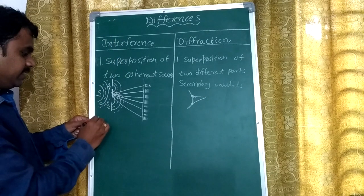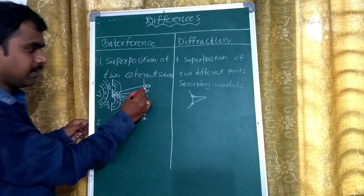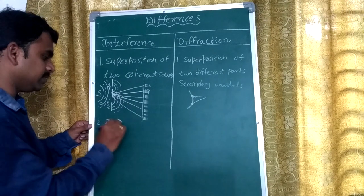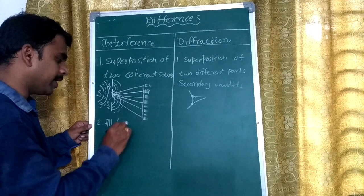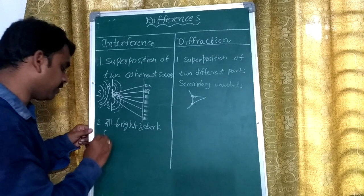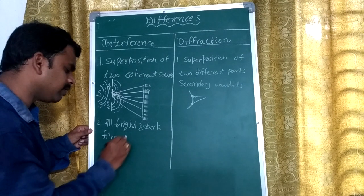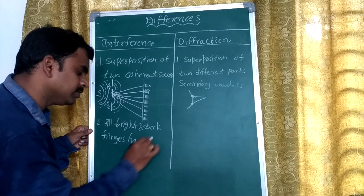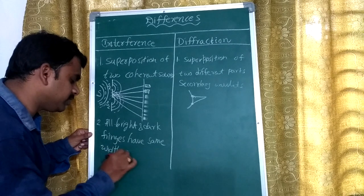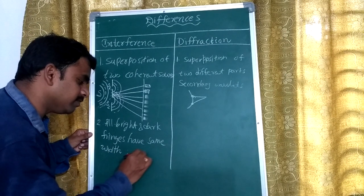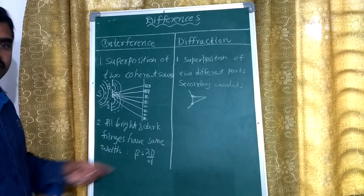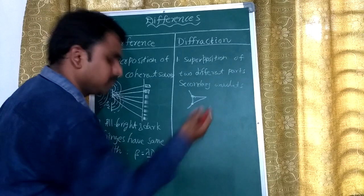The second difference is: in interference, all bright and dark fringes have the same width. According to Young's double slit experiment, that is beta equals lambda D by d.